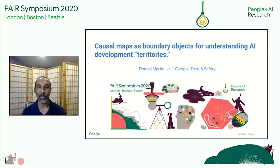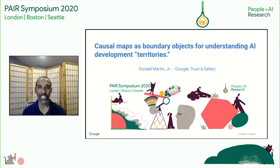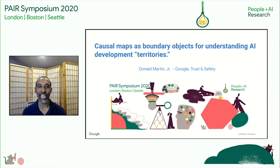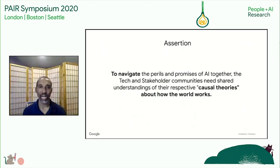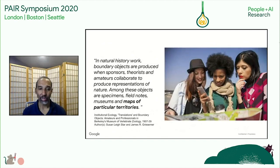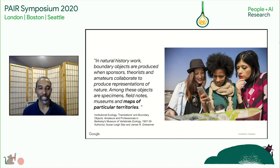Hello, everyone. My name is Donald Martin. I'm a technical program manager at Google. The title of my lightning talk is Causal Maps as Boundary Objects for Understanding AI Development Territories. I want to start with a high-level assertion: to navigate the perils and promises of AI together, the tech and stakeholder communities need shared understandings of their respective causal theories about how the world works. To navigate together requires a map. A map is the quintessential boundary object as described in the seminal work by Star and Griesemer, where boundary objects are produced when sponsors, theorists, and amateurs collaborate to produce representations of nature — among them specimens, field notes, museums, and maps of particular territories.